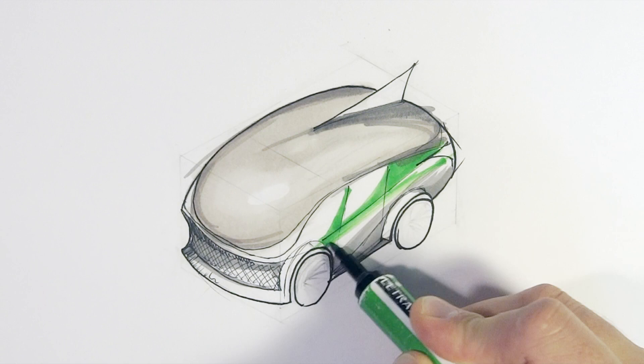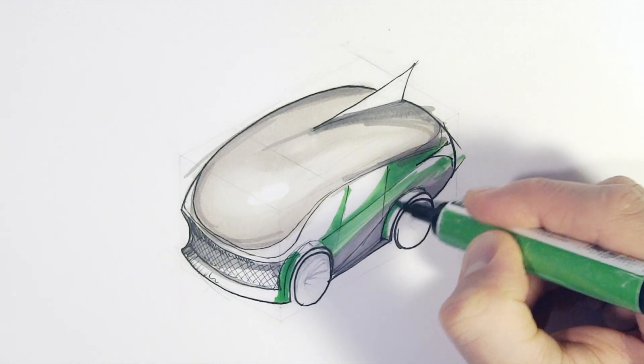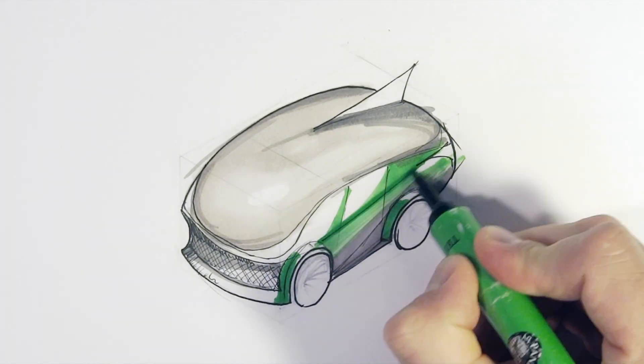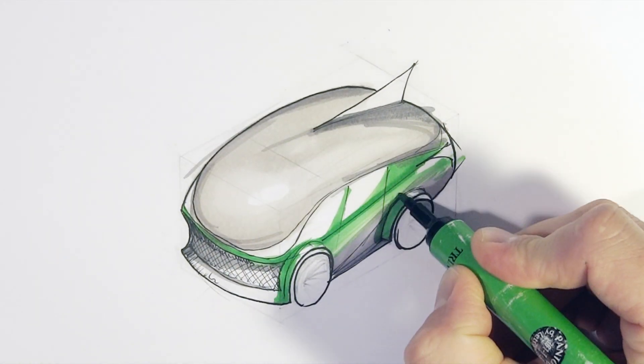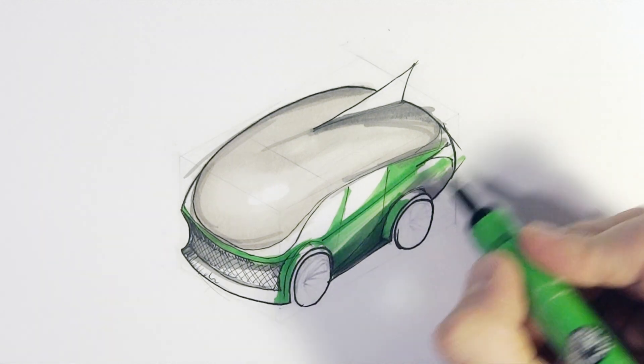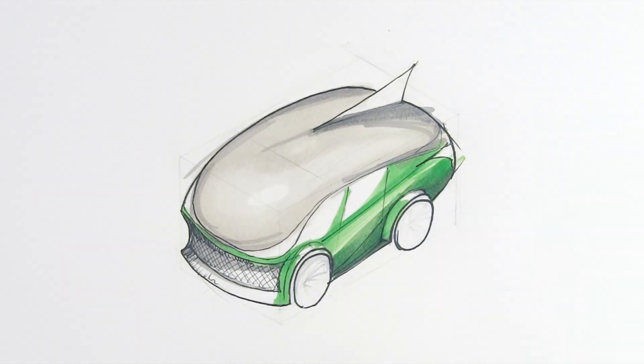Starting to add a bit of color now and I've gone with green, Land Rover green. Just starting to build it up in the areas that you can see the body work. I'm leaving the window a bit clear. The top, I'm going to call that a bit of panoramic roof. I'm just going to put a bit of green on it.